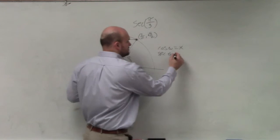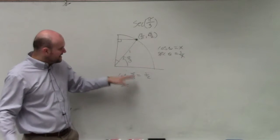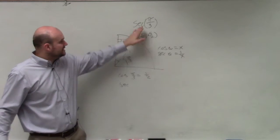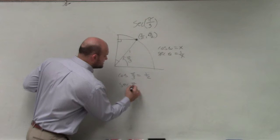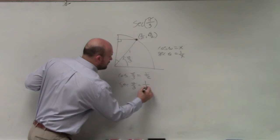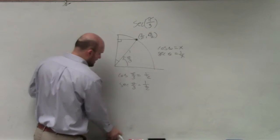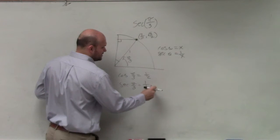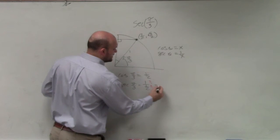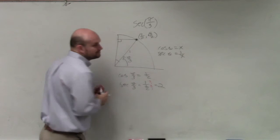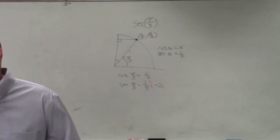1 over x. So if the cosine of pi over 3 is the x coordinate, which is 1 half, then the secant of pi over 3 is going to be 1 over 1 half. You don't want to divide by a fraction, so you multiply, and you end up getting 2 — which is just the reciprocal. What's the reciprocal of 1 half? 2.